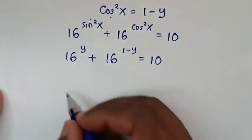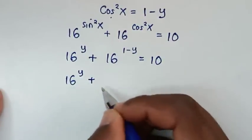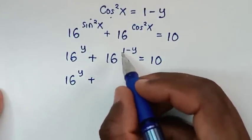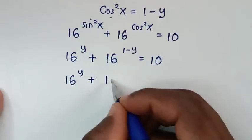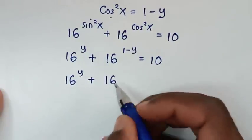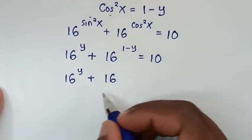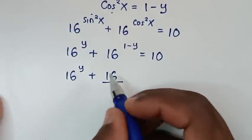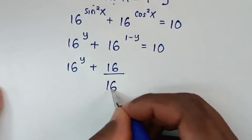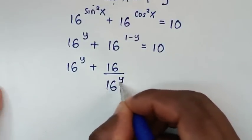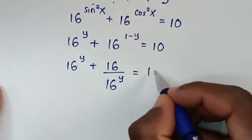Then our equation: 16 power of (1 minus y) is equal to 16 power of 1, which is 16, times 16 power of negative y. And 16 power of negative y is the same as 16 power of y in the denominator. So the equation becomes 16 times (1 over 16^y) plus 16^y equals 10.